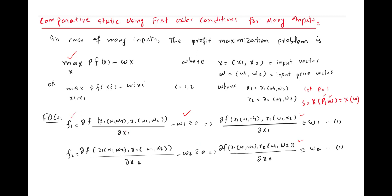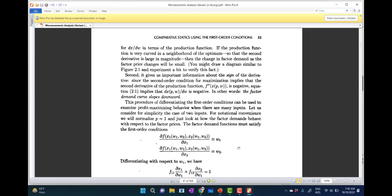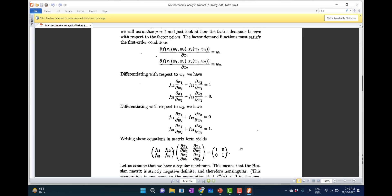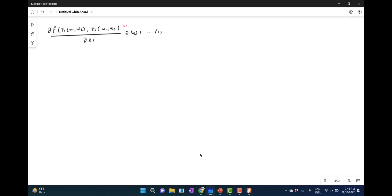The first partial derivative with respect to x1 gives the first order condition, and the first partial derivative with respect to x2 gives the second first-order condition. Shifting w1 and w2 to the right-hand side gives us Equation 1 and Equation 2 — these are the first order conditions for profit maximization. For comparative statics we take the derivative of these first order conditions with respect to w1 and w2. This is somewhat complex and the results are given in the Varian textbook.